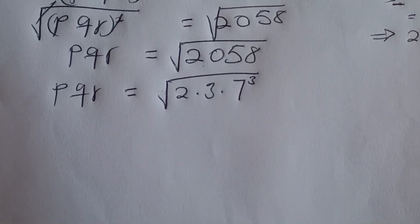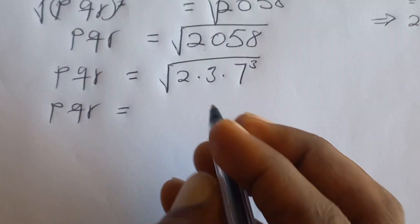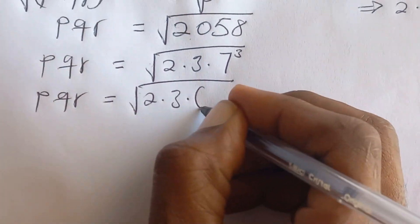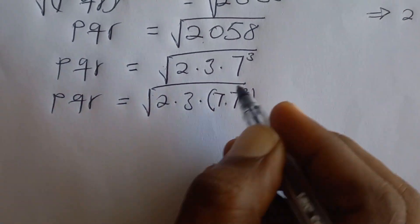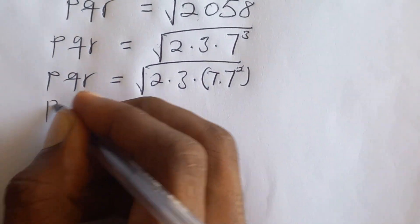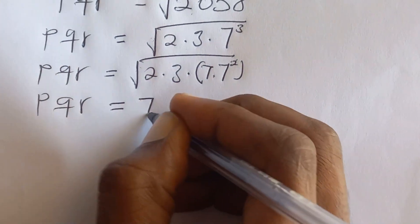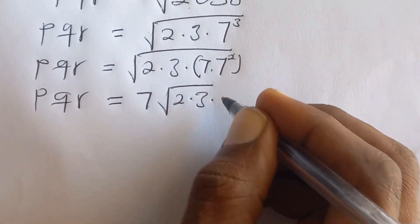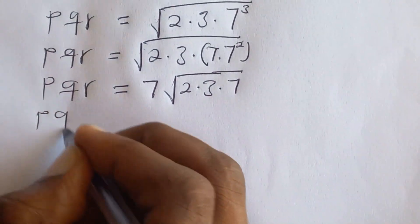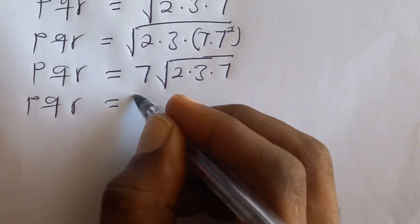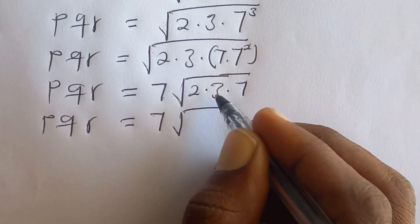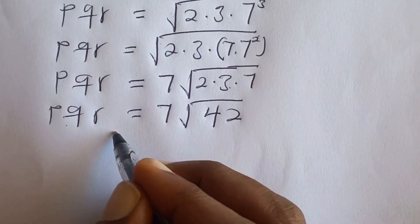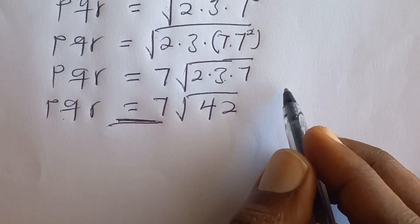PQR equals the square root of 2 times 3 times 7 squared times 7. The 7 squared comes out of the square root, giving PQR equals 7 times the square root of 2 times 3 times 7. Since 2 times 3 is 6 and 6 times 7 is 42, our PQR equals 7 square root of 42.